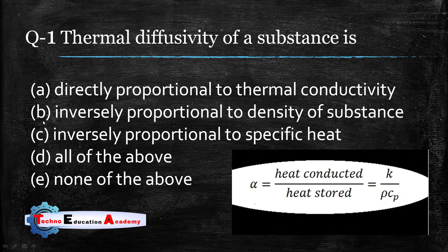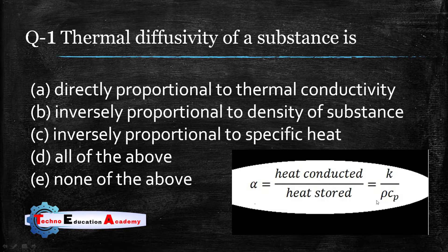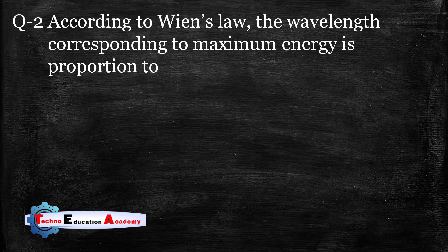The second option states it is inversely proportional to density — thermal diffusivity is inversely proportional to density, so that is also true. Option C: inversely proportional to specific heat — alpha equals k divided by rho times Cp, where Cp is specific heat at constant pressure, so it is inversely proportional to specific heat. The right answer is option D: all of the above.